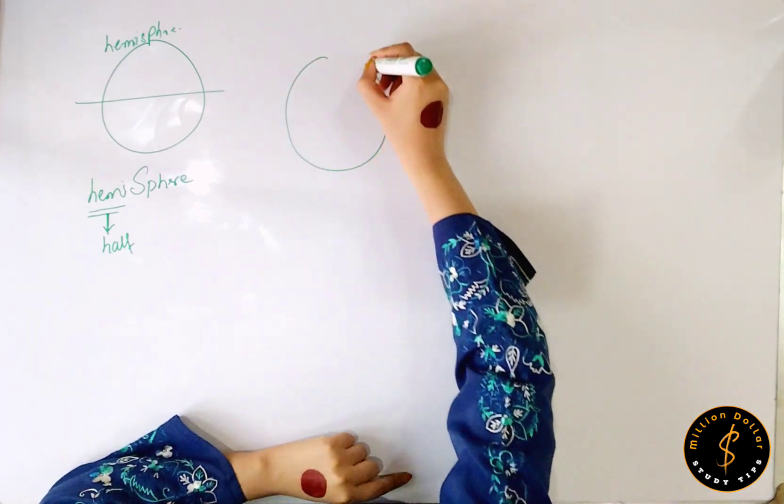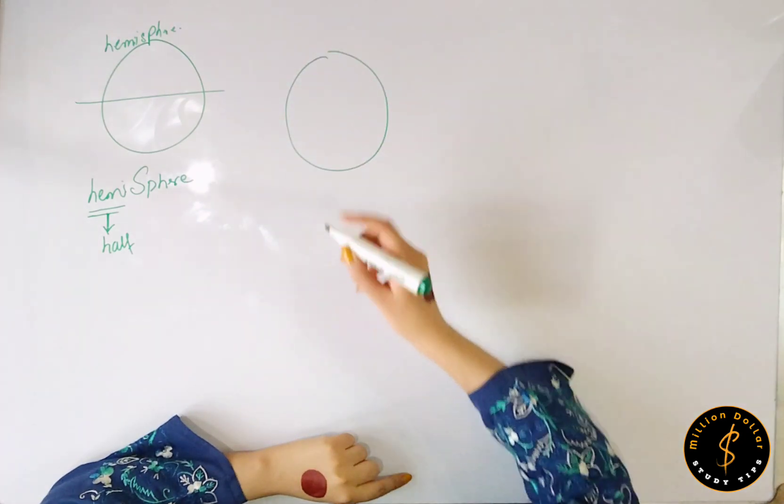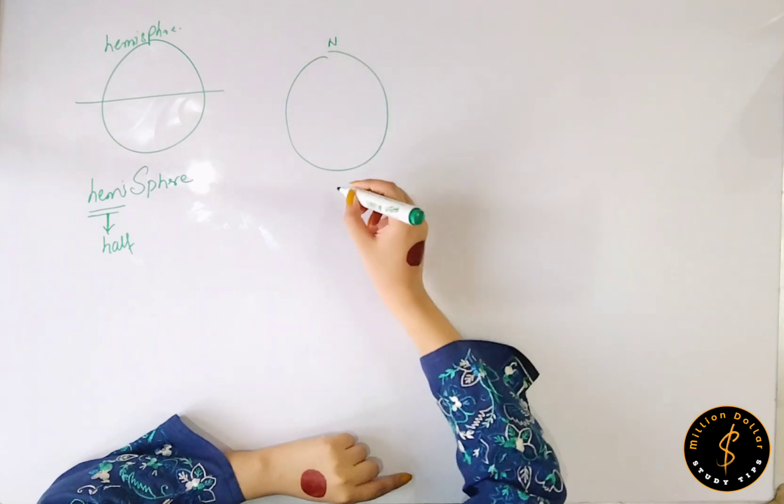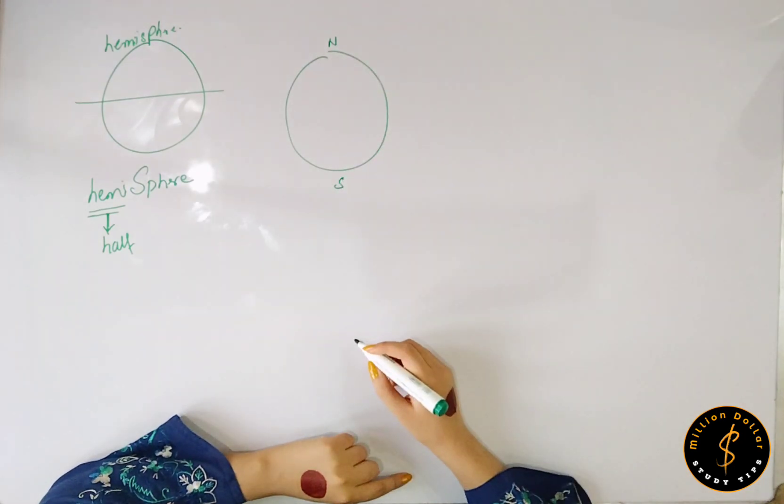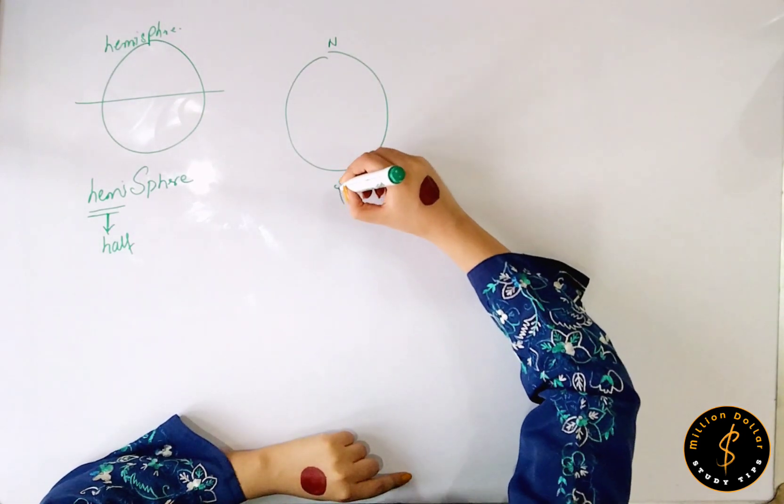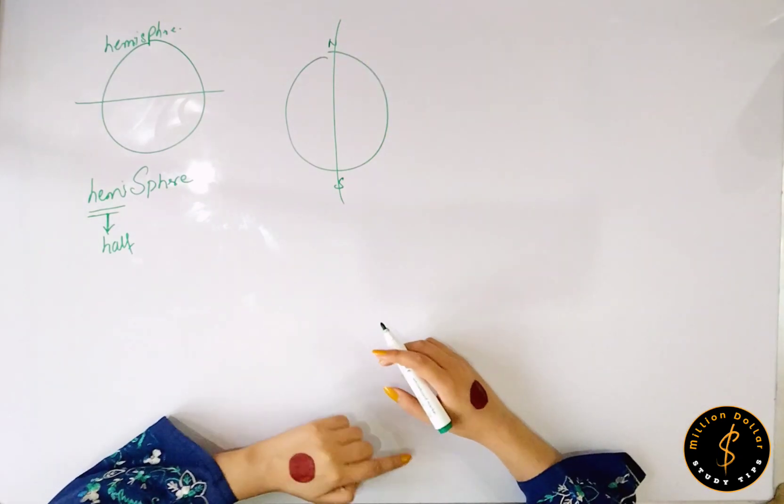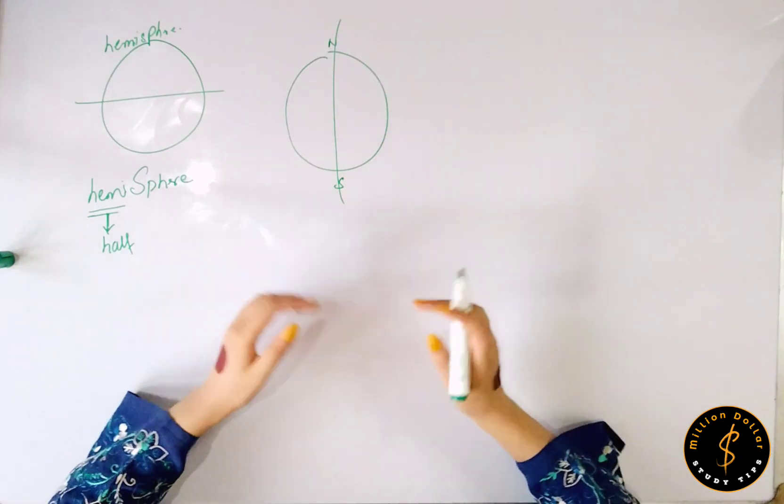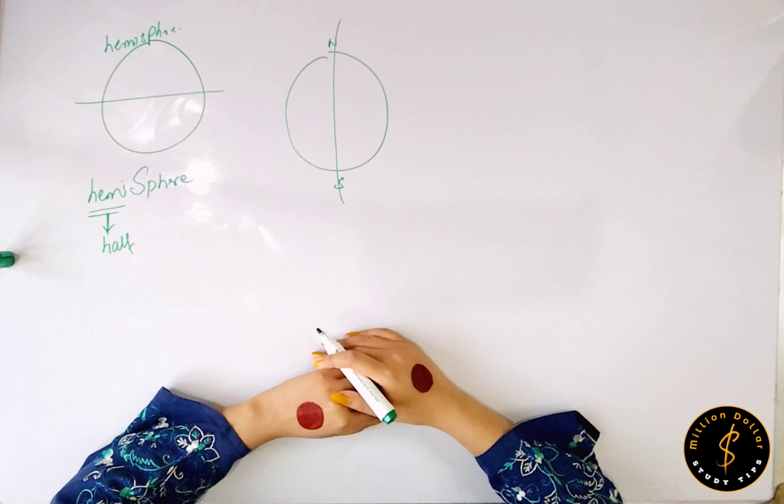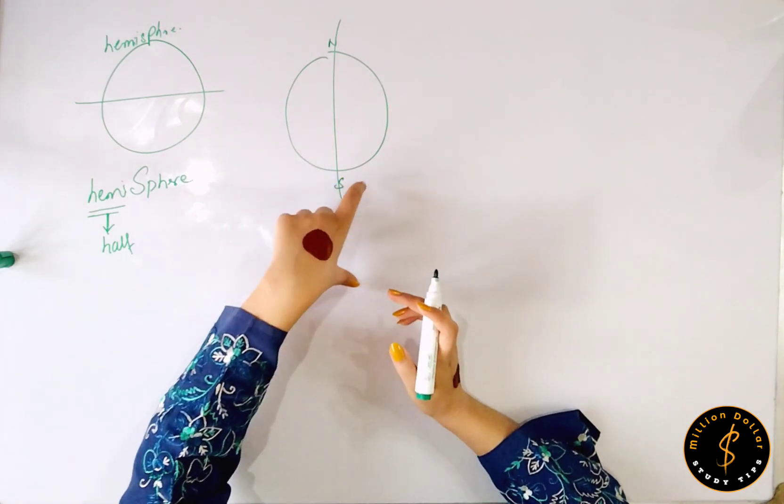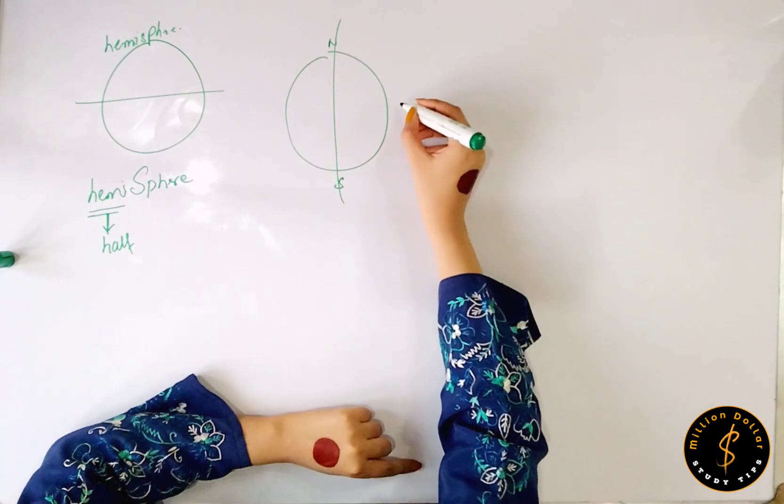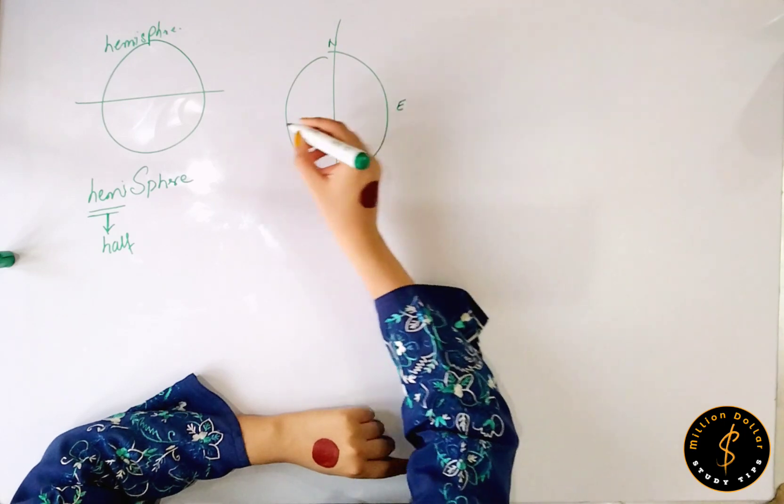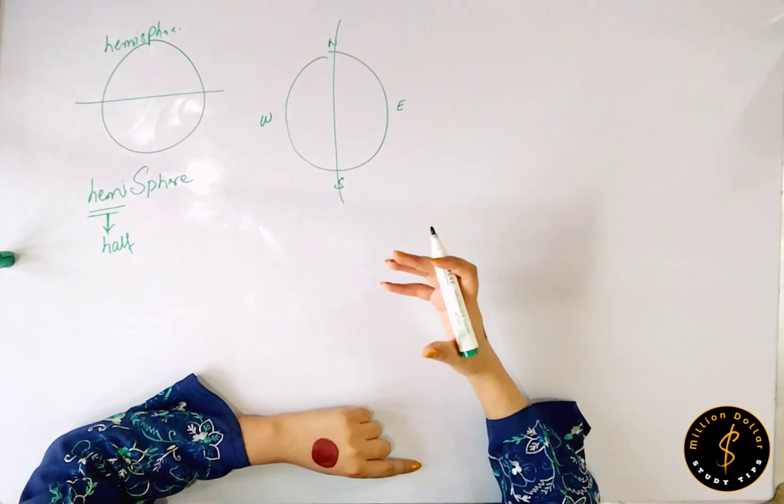Let's suppose this is your planet Earth. This is your north and this is south. If we draw an imaginary line from north to south and divide Earth into two portions, then Earth will have two hemispheres. Now here we have east and here we have west of your planet Earth.